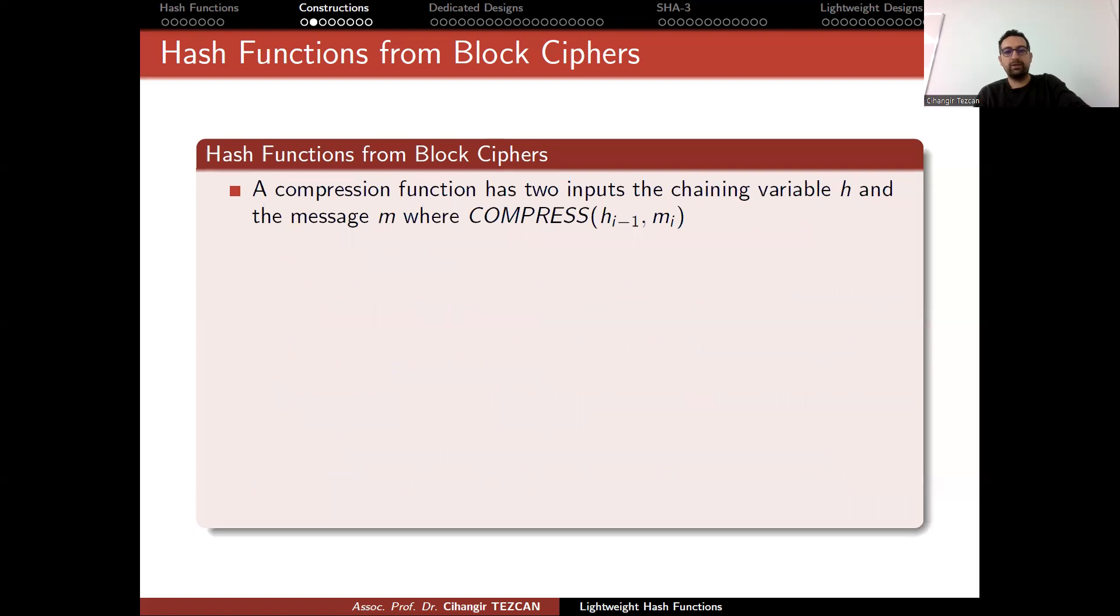So let's look at how we do it. A compression function has two inputs, the chaining variable h and the message m where compress h_{i-1} and m_i provides you h_i. So assume we have such a function as compress that takes two inputs and provides a single output. So instead of this compression function, we will use a block cipher like AES.